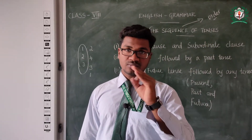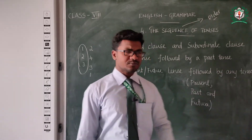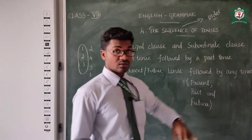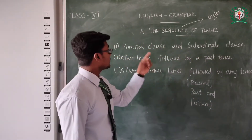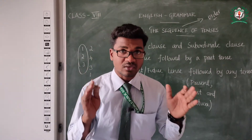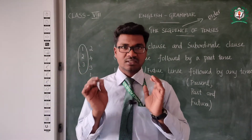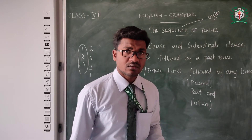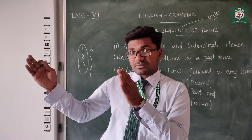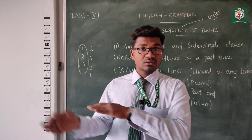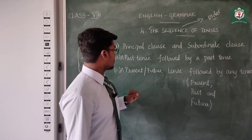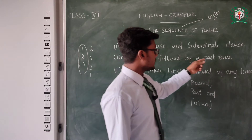Tenses are present, past, and future — there are types. Now let's see about principal clause and subordinate clause. I have already taught you what is meant by principal clause and subordinate clause. The principal clause is the main clause. The rest of the sentence attached to it is the subordinate clause. If we remove the subordinate clause, we still get the meaning — that is the principal clause.